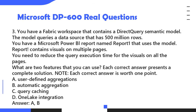Question 3. You have a Fabric workspace that contains a DirectQuery semantic model. The model queries a data source that has 500 million rows. You have a Microsoft Power BI report named Report 1 that uses the model. The report contains visuals on multiple pages. You need to reduce the query execution time for the visuals on all the pages. What are two features that you can use? Each correct answer presents a complete solution. Each correct answer is worth one point.